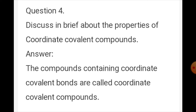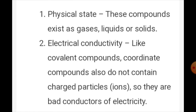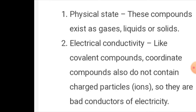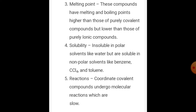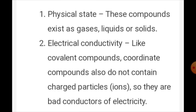Question number 4: discuss the properties of coordinate covalent compounds. Compounds containing coordinate covalent bonds are called coordinate compounds. Physical state: these compounds exist as gases, liquids, and solids. Electrical conductivity: like covalent compounds, coordinate compounds do not contain charged particles, so they are bad conductors of electricity. Melting point: these compounds have melting and boiling points higher than purely covalent compounds but lower than purely ionic compounds. Solubility: insoluble in polar solvents like water but soluble in non-polar solvents like benzene, carbon tetrachloride, and toluene. Reactions: coordinate covalent compounds undergo molecular reactions which are slow.